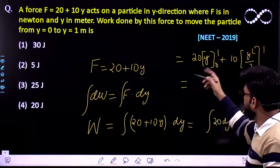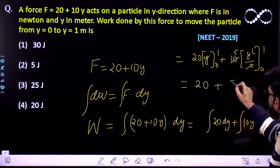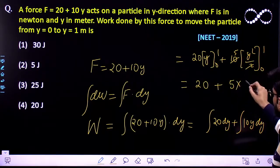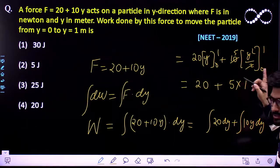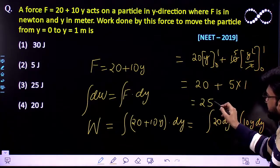So we will be putting the value so it would be 20 plus 5 so 5 multiplied by 1, 1 square minus 0 square so you will be getting inside it would be 1. So the final answer that we are getting is 25J.